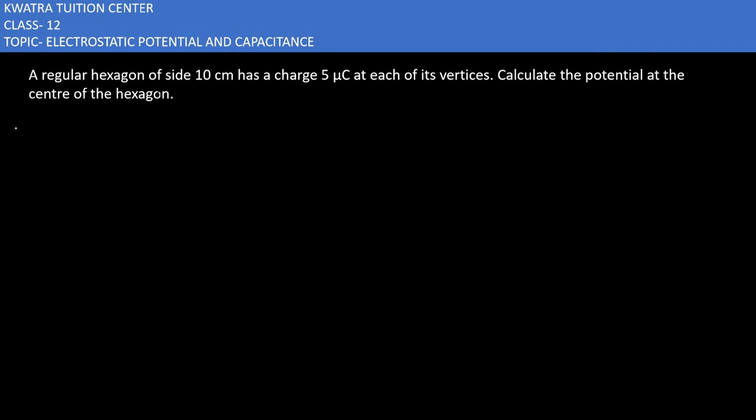Now starting with the second problem: a regular hexagon of side 10 centimeter has a charge of 5 microcoulomb at each of its vertices. Calculate the potential at the center of the hexagon.